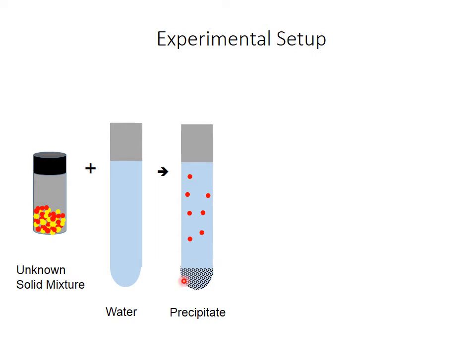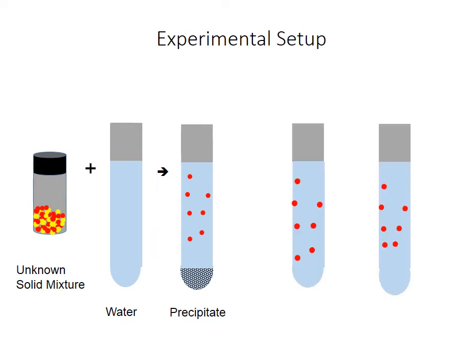We'll focus a lot of attention on how to get this precipitate out as cleanly as we can, dry it out, and get a mass for it. We want to figure out which one — the red or yellow ball — we ran out of. To do this, we take the supernatant — that's the liquid above the precipitate — and split it into a couple of test tubes or beakers.